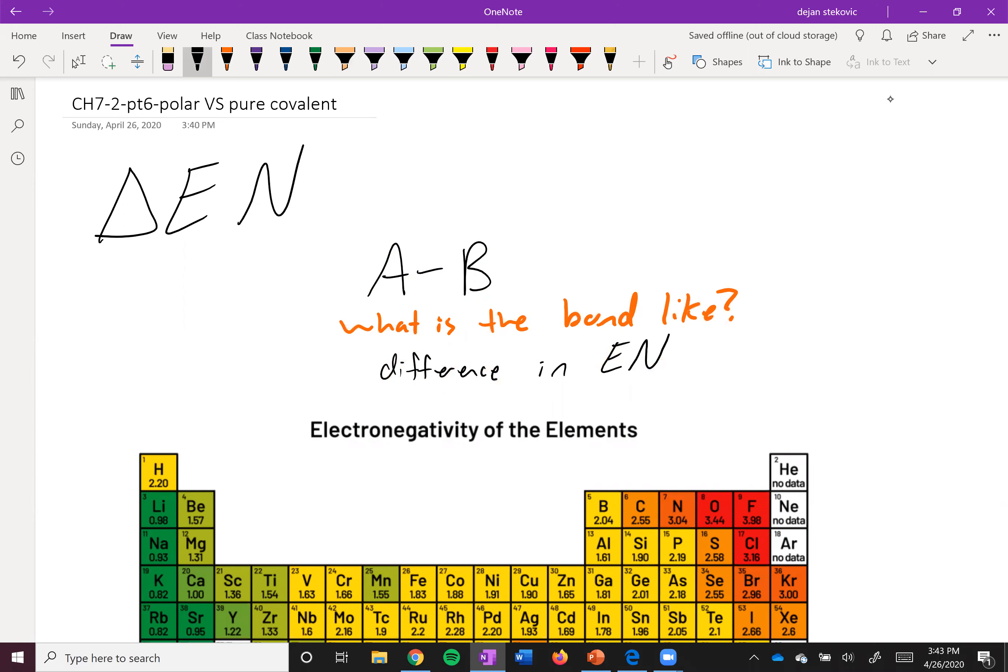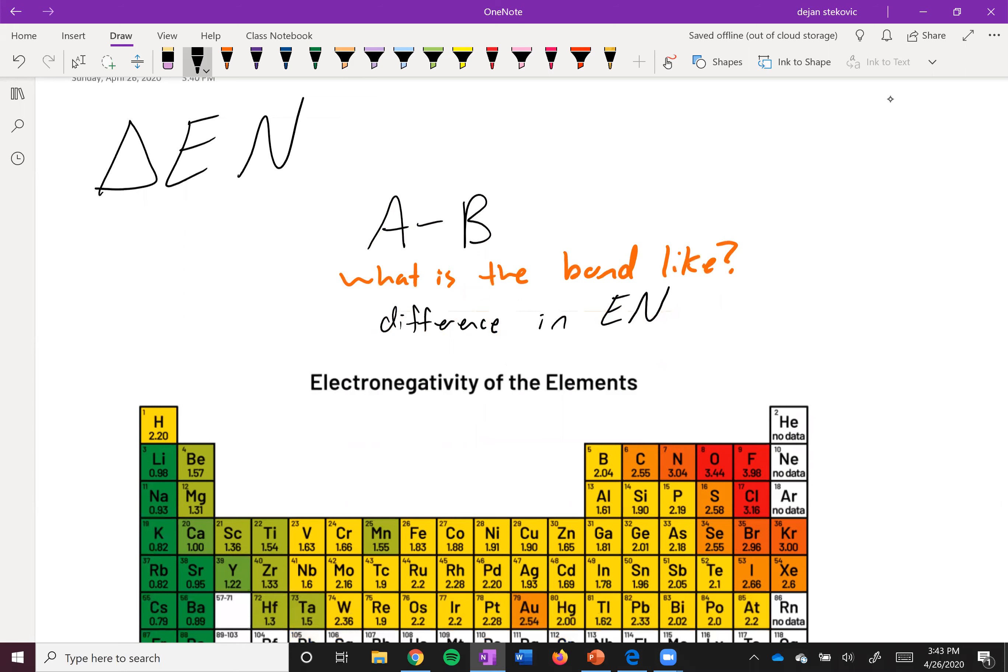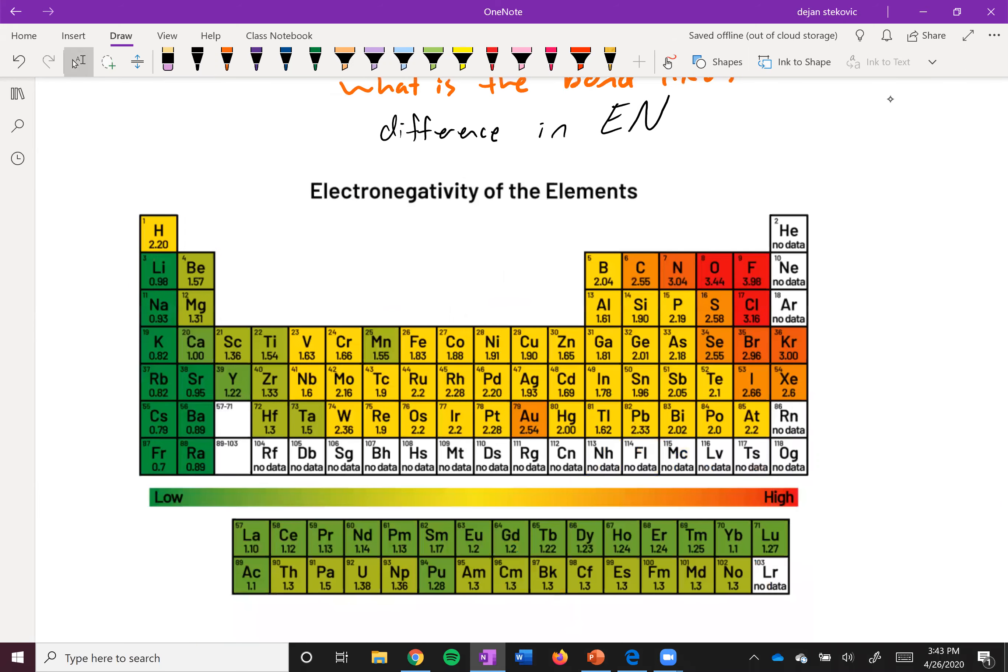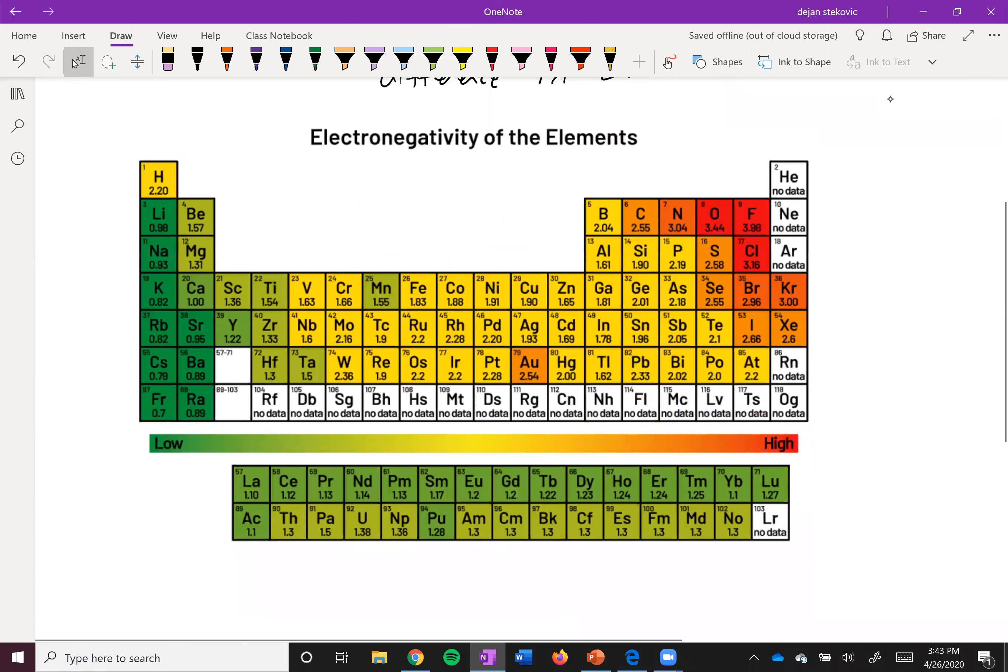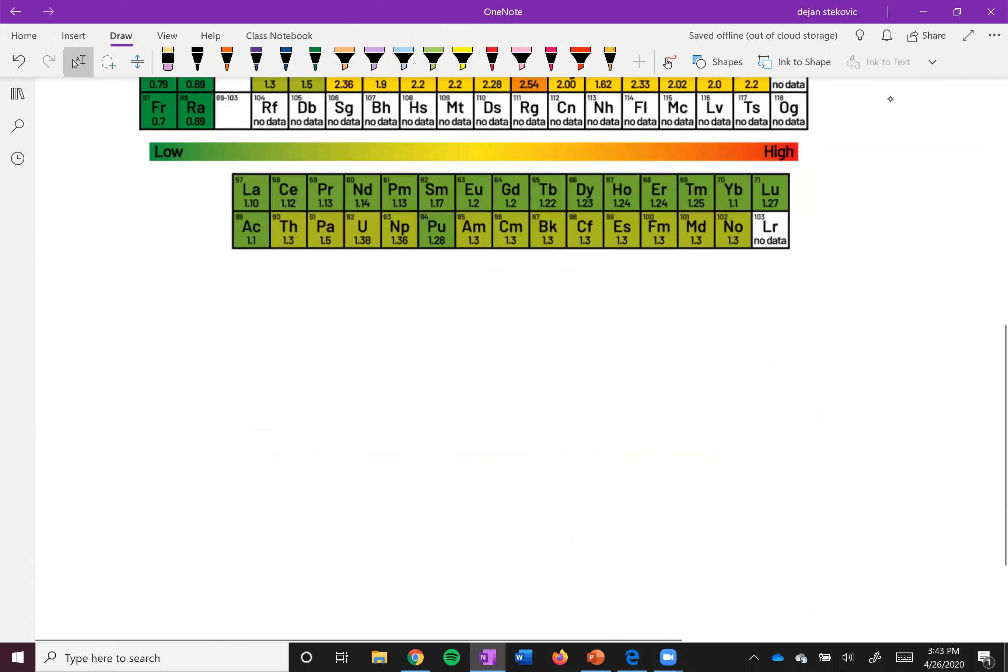And so here we've got our electronegativity table. So let's take a look at the different kinds of bonds we can have here based on the difference of electronegativity. So we can have a small difference in electronegativity. So this is generally like 0 to 0.4 difference approximately. None of this stuff is kind of exact. There's no hard limit.